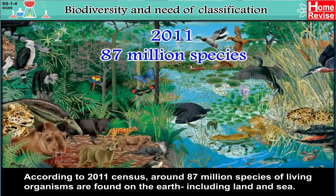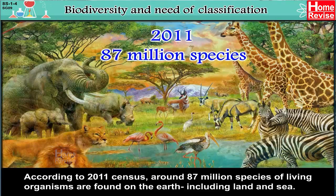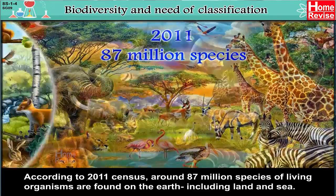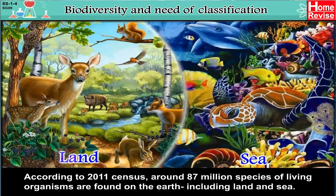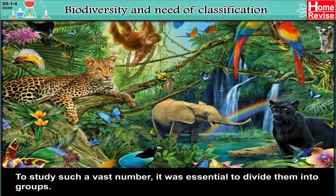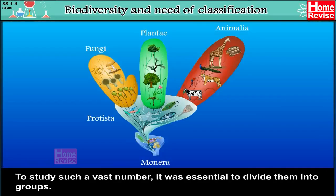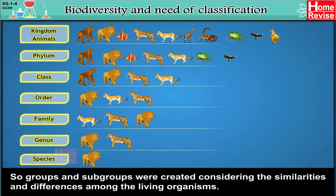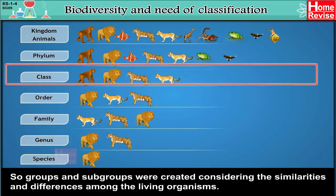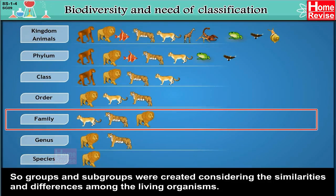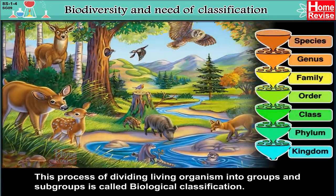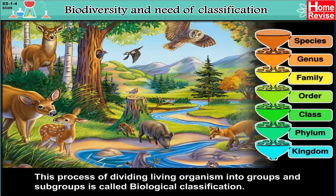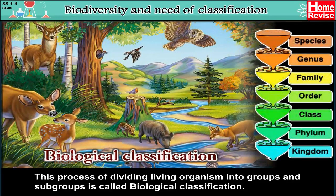According to the 2011 census, around 87 million species of living organisms are found on the earth, including land and sea. To study such a vast number, it was essential to divide them into groups. So groups and subgroups were created considering the similarities and differences among the living organisms. This process of dividing living organisms into groups and subgroups is called Biological Classification.